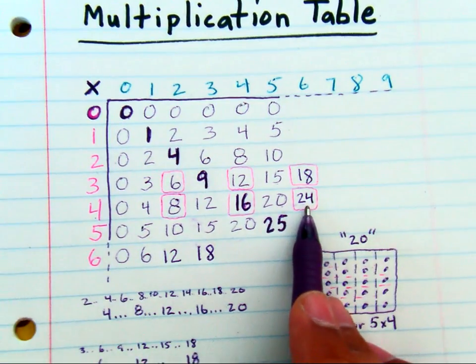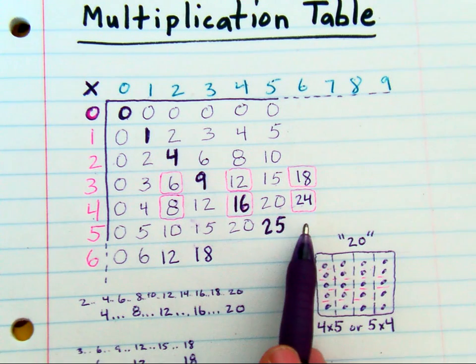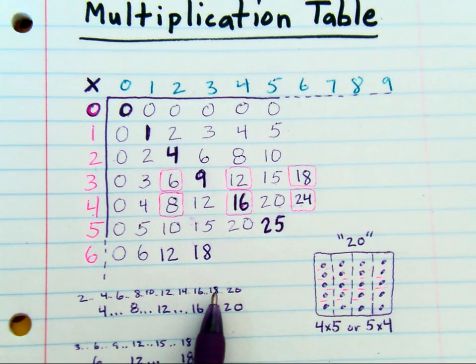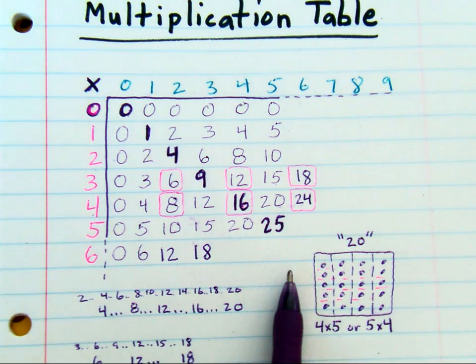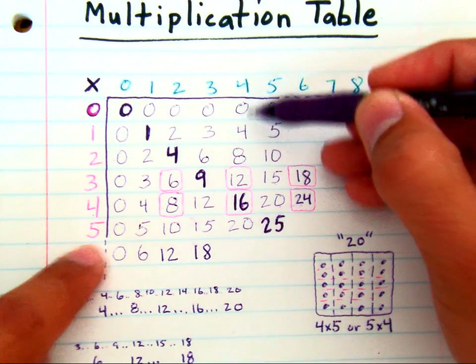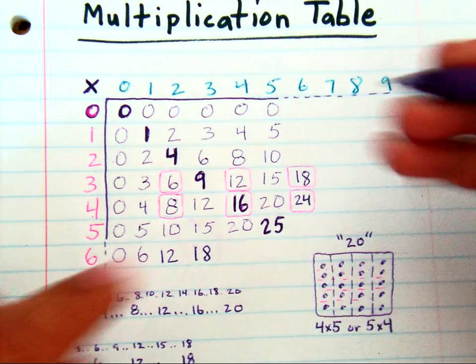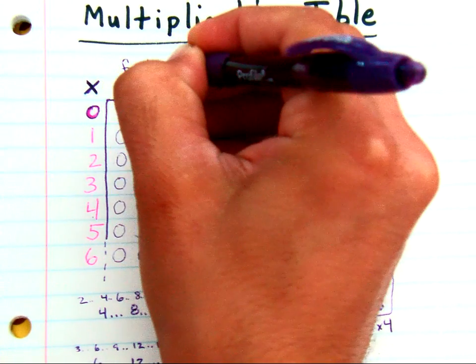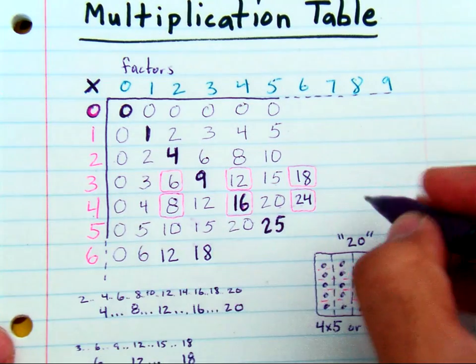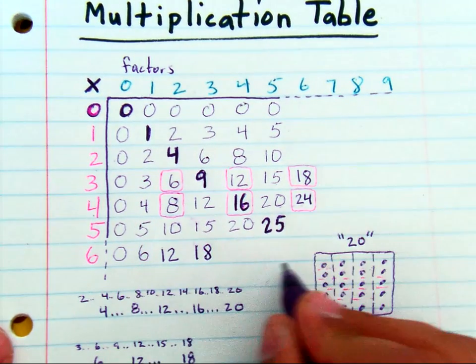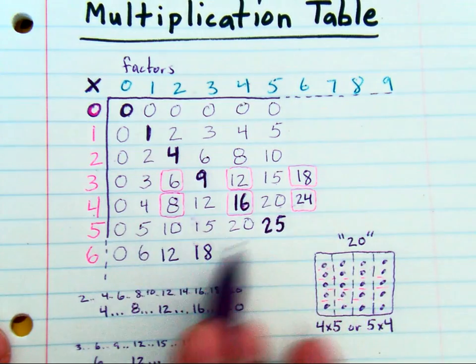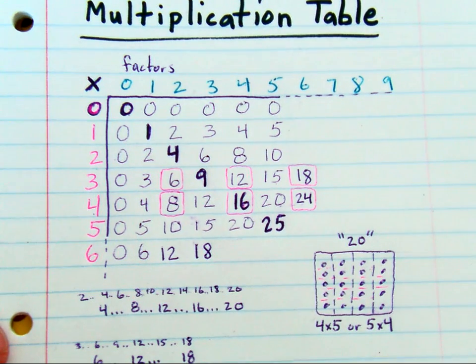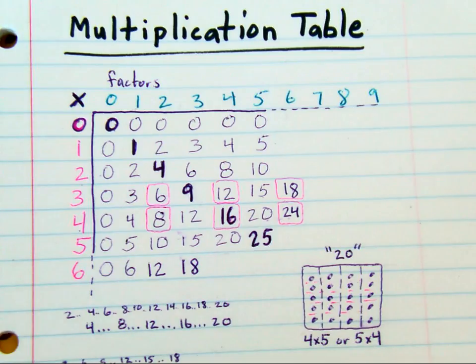So that's a really important pattern to notice. You have even numbers, you have threes that are the same as sixes, fours that are the same as eights. There are different ways of lining up factors to get products. These are the factors, and these are the products in here. So factors along the top, factors along the side, and products in the middle. And those are some of the patterns that you're going to be working with in this lesson.